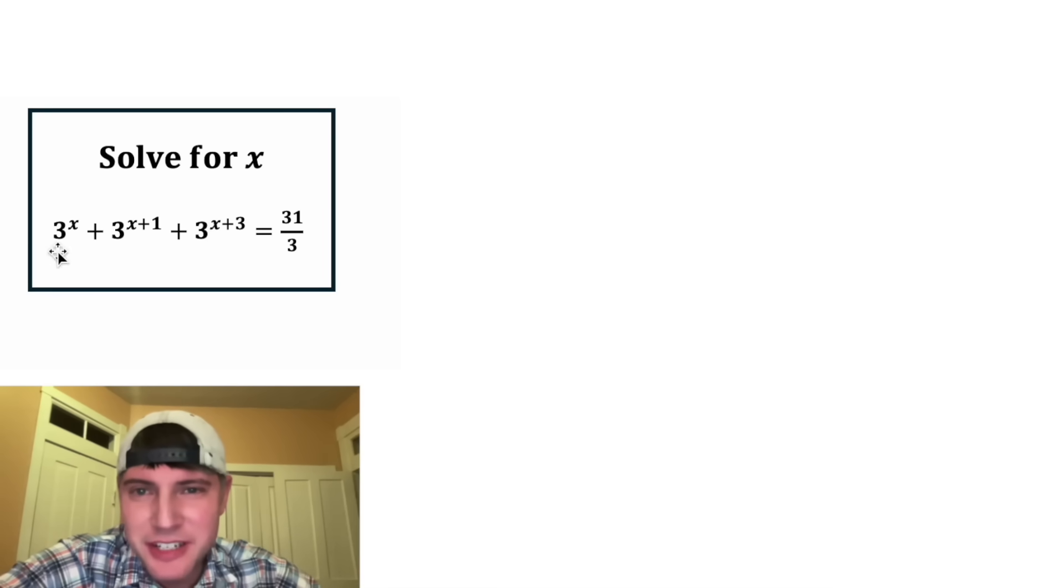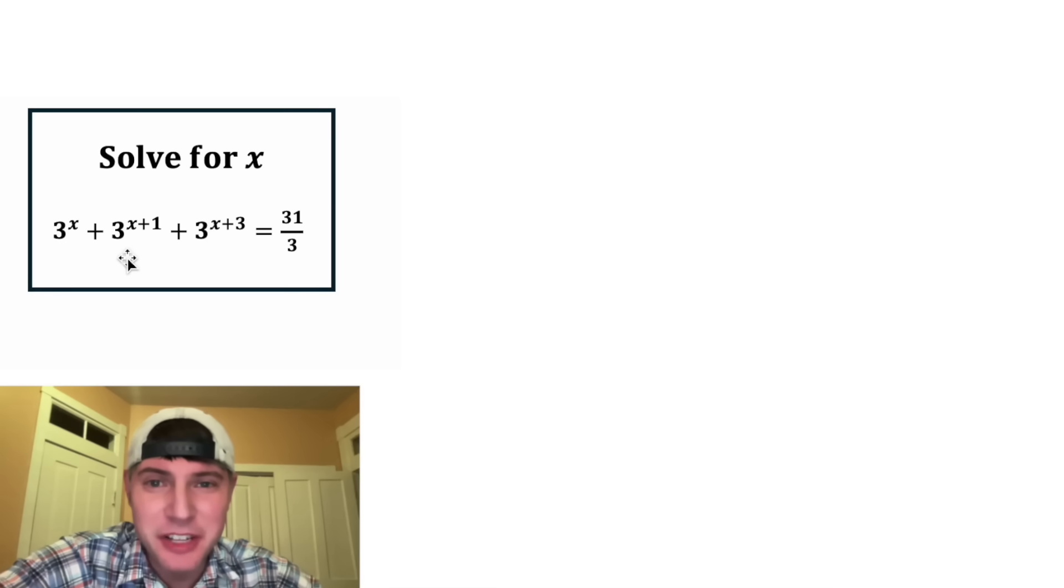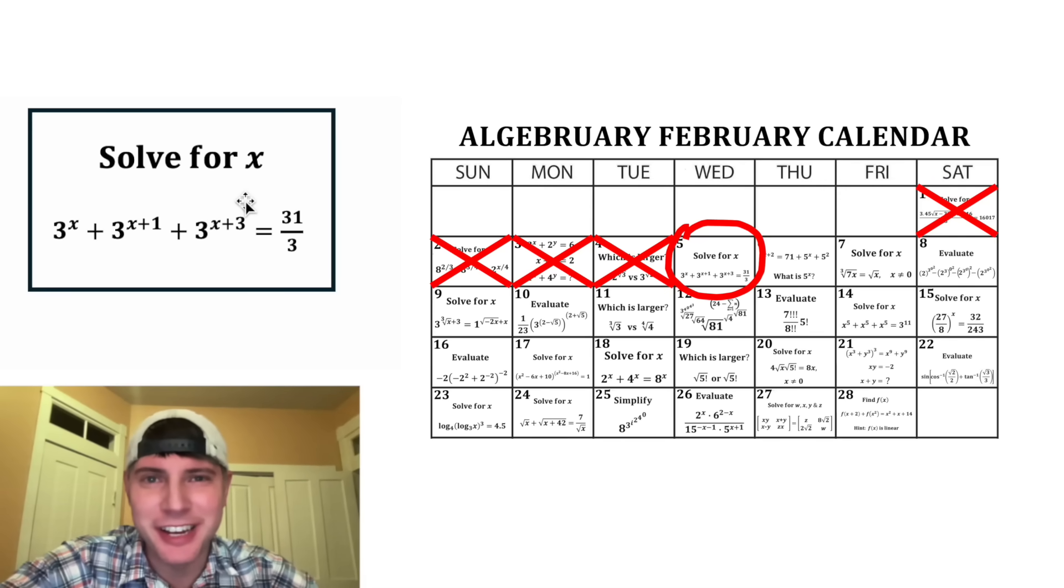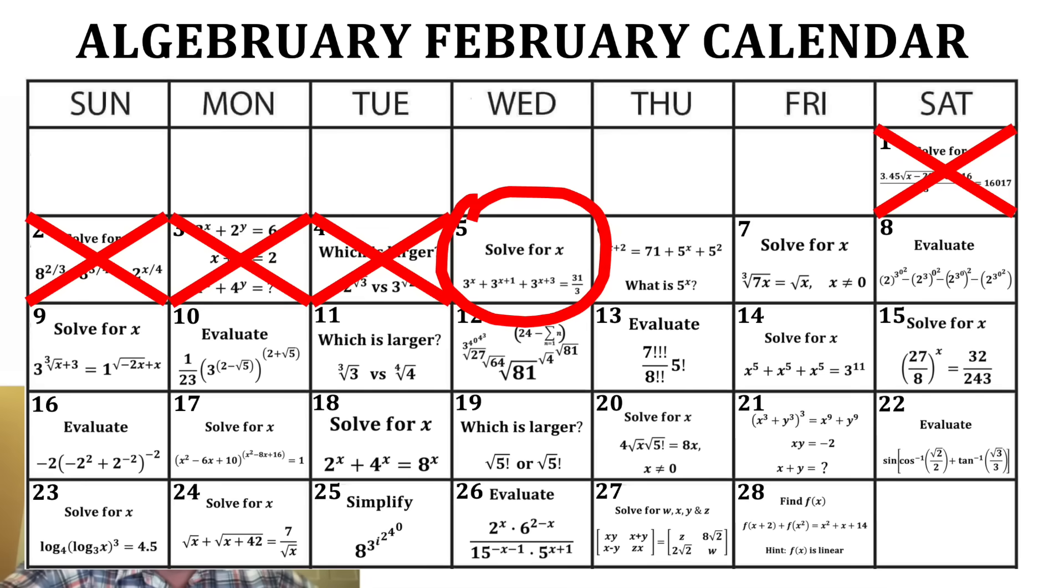Hey guys, this looks like a fun one. It says three to the power of x plus three to the power of x plus one plus three to the power of x plus three equals 31 thirds, and it wants us to solve for x. This is day five of our Algebra February calendar. For the month of February, we're going to solve 28 Algebra problems. There's some pretty cool looking ones here.